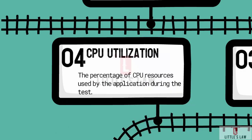Moving on to the fourth metric, which is CPU utilization. CPU utilization is the percentage of CPU resources used by the application during the test. High CPU utilization signals a potential performance bottleneck or inefficiency in the application code that needs to be addressed to ensure smooth operation.